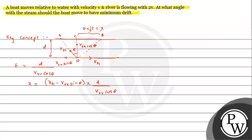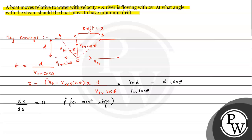Now we need to make the drift minimum, so we use the condition of minima: dx/dθ = 0 for minimum drift. We differentiate the drift expression and equate to zero. The expression can be written as v_r · d / (v_br·cos θ) minus d·tan θ. Taking the derivative and setting it to zero gives us: (v_r / v_br)·sec θ·tan θ − sec²θ = 0.